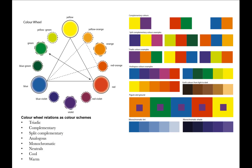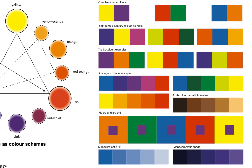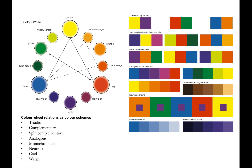Our understanding of color is an understanding of the color wheel, and the application of color requires an understanding of color schemes. Here are some major color schemes: the triadic, the complementary, the split complementary, analogous colors, monochromatic colors, neutrals, cool colors and warm colors.